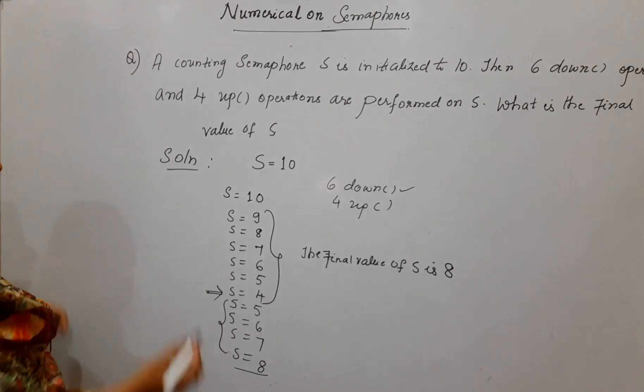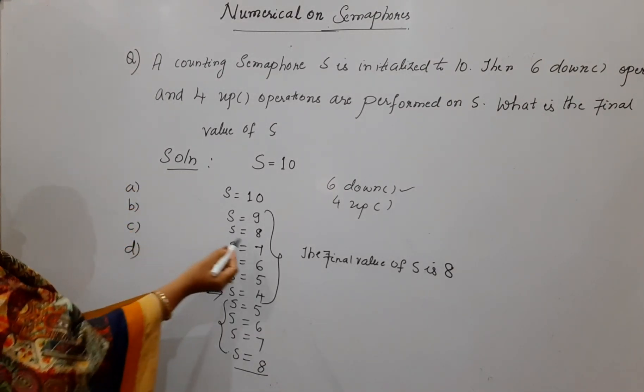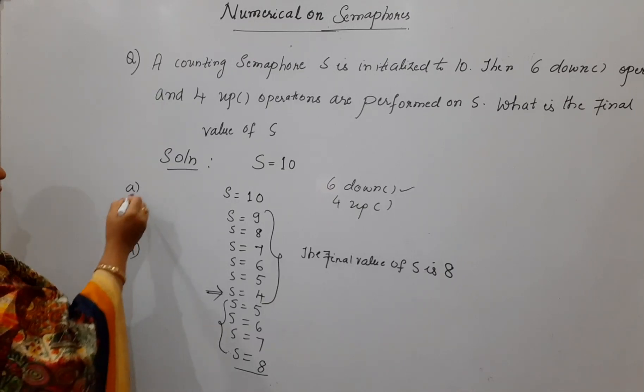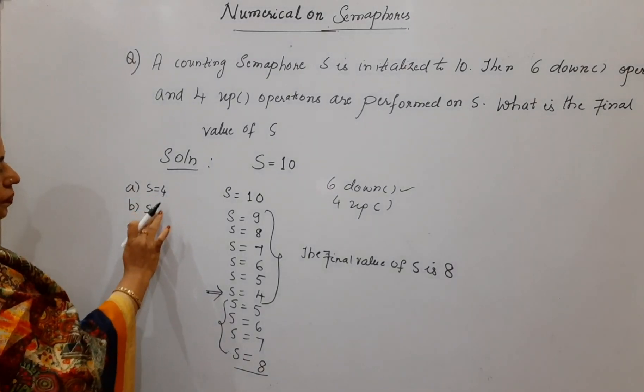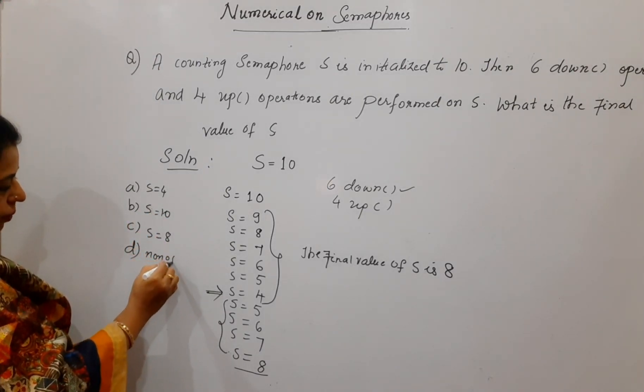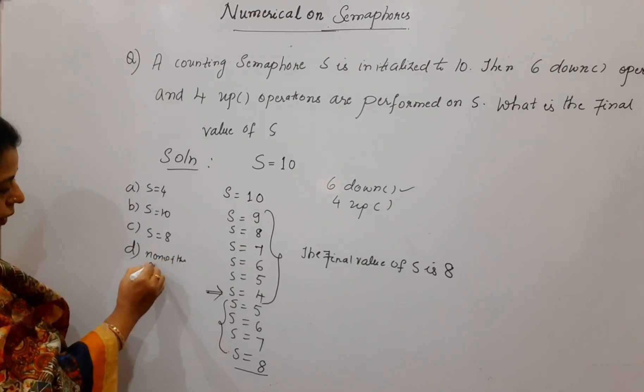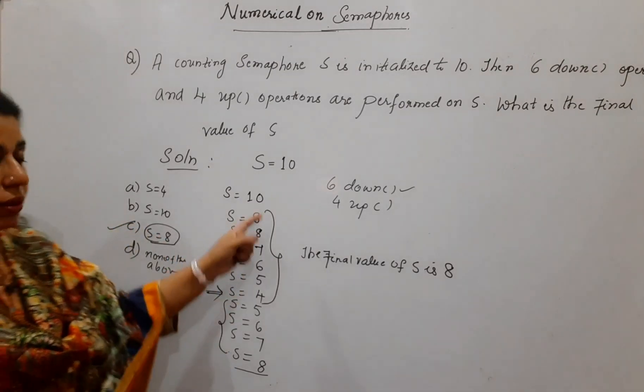So this can be a multiple choice question also wherein they can give the options A, B, C, D wherein they can write the final value. The different options I am just telling: S equal to 4, S equal to 10, S equal to 8, none of the above. So, that time you can select, yes, the value for S is 8 in this case.